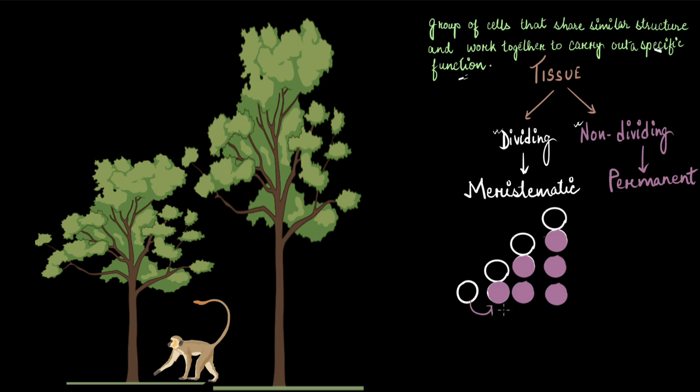The meristematic tissue gave rise to special kinds of tissues - permanent tissue. There are various types of permanent tissue: some responsible for water transport, some for food transport. The process of formation of specialized tissues from meristematic tissue is called differentiation.